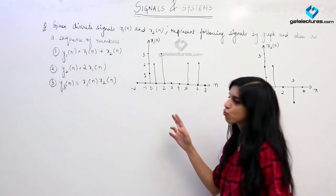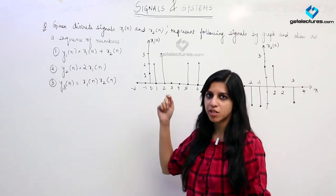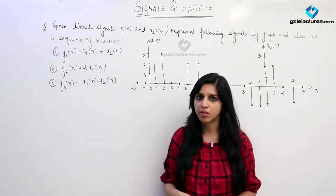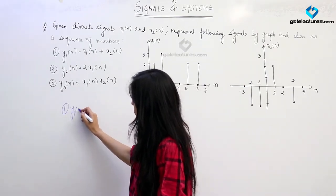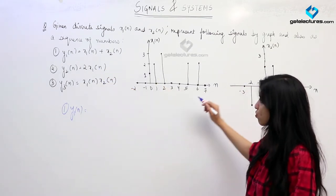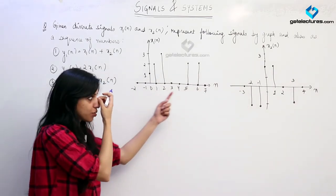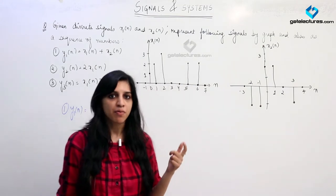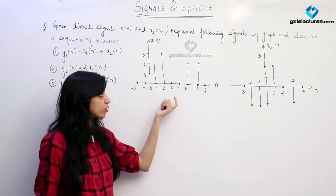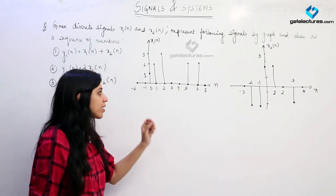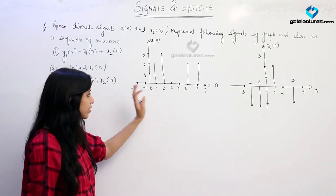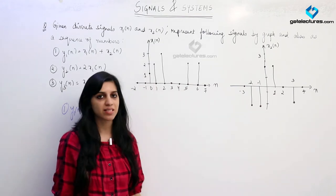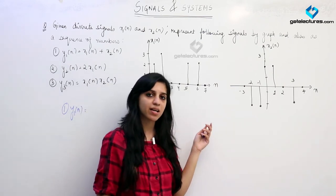Now the next question gives us two discrete time signals x1[n] and x2[n] and asks us to perform addition and multiplication on them. Looking at y1[n] first — to obtain y1[n] we just add these two signals. This signal had samples from n = 0 to 6, and this signal had samples from n = -2 to n = 3. When adding, wherever both signals have samples, those samples get added — like a union.